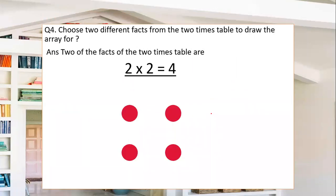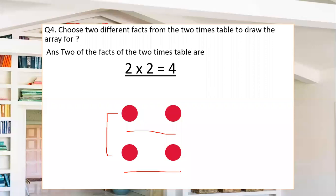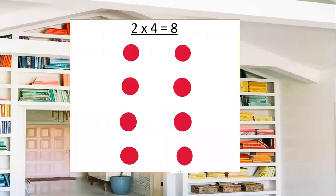Next we have: choose 2 different facts from the 2 times table to draw the array. An array is an arrangement of something — if you are given some things and asked to draw the array, you have to draw it with a proper arrangement. I have taken 2 two times is 4 — I drew 2 circles in each row and there are 2 rows, making 4 circles total.